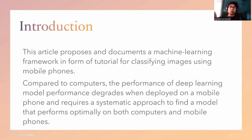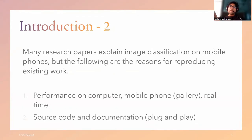This article proposes and documents our machine learning framework in the form of a tutorial for classifying images using a mobile phone. Compared to computers, the performance of a deep learning model degrades when applied on a mobile phone, and it requires a systematic approach to find an optimal model for both computers and mobile phones. Many research papers explain image classification on mobile phone, but the following are the reasons to reproduce existing work: they haven't discussed the combined comparison of performance of a model on computer, mobile phone, and real-time testing. So we included three types of testing.